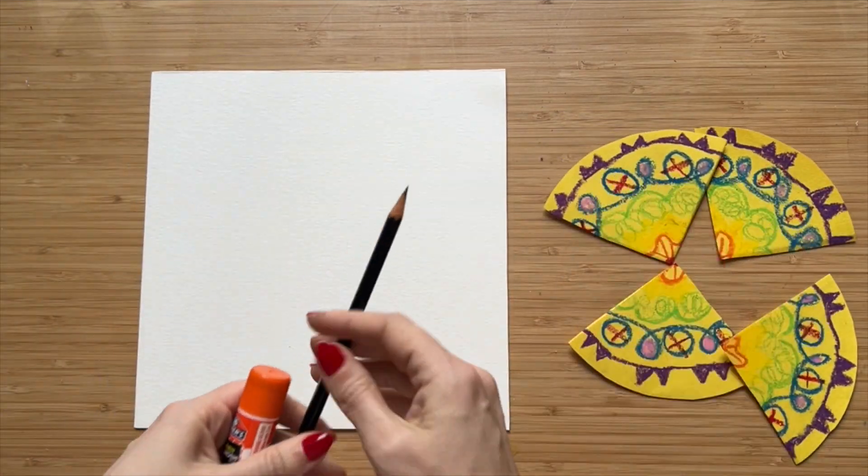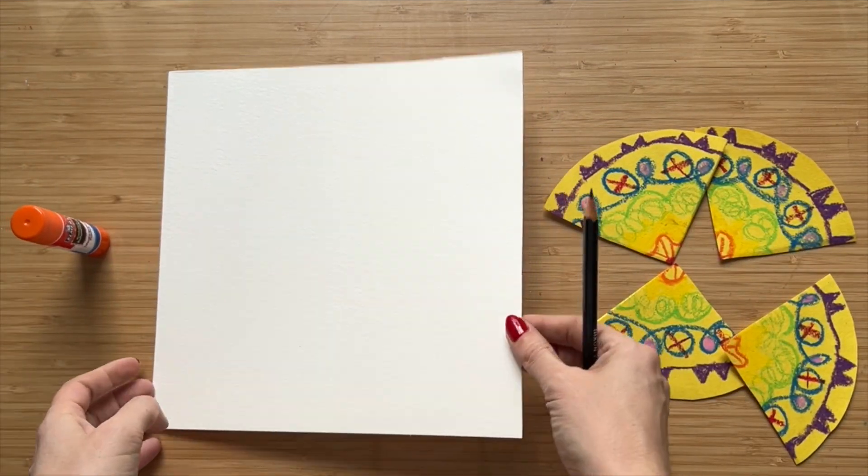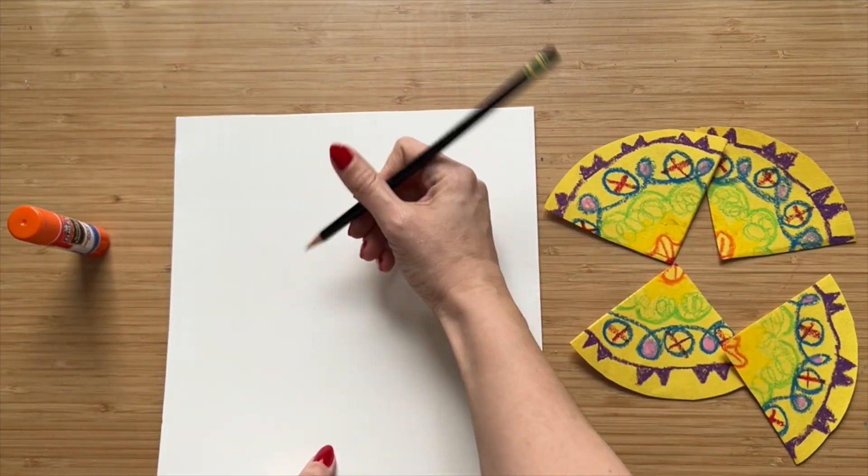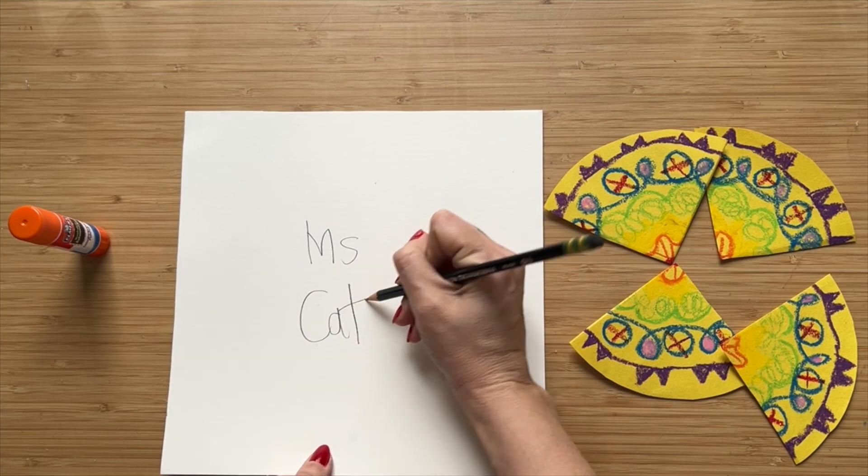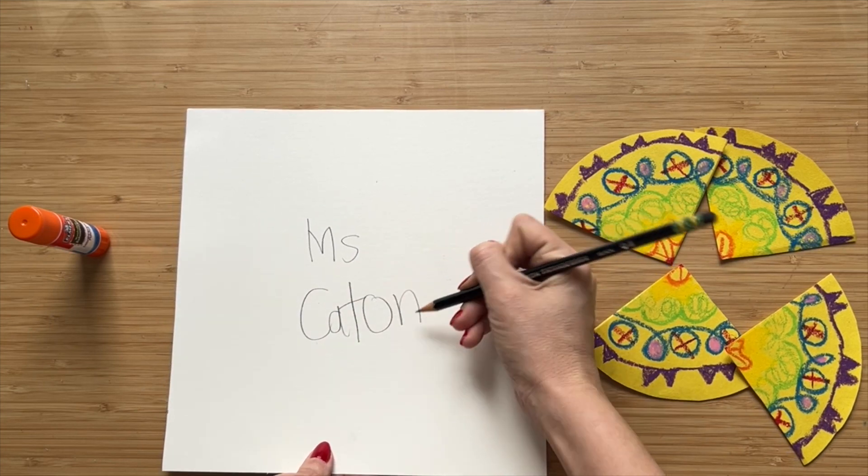You're going to take the square piece of paper and the glue stick, the pencil. You need to write your name on the back of the square piece of paper along with your class number.